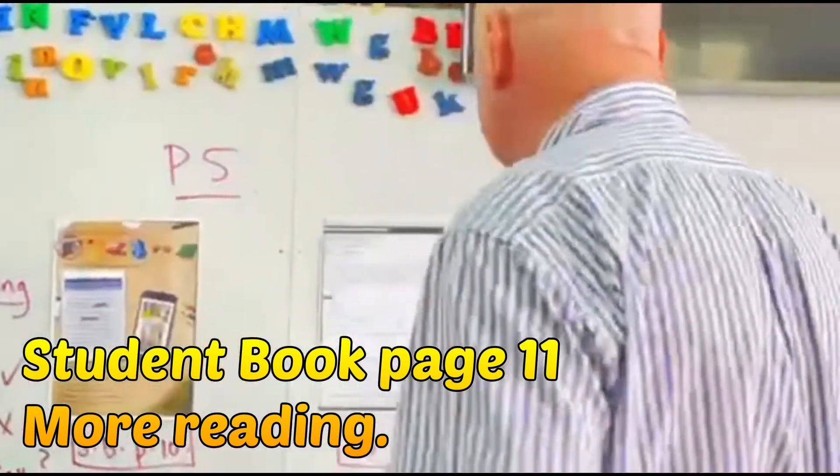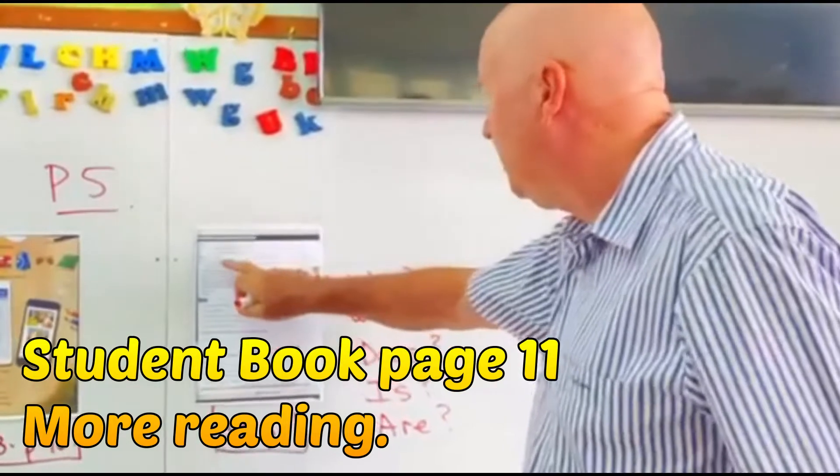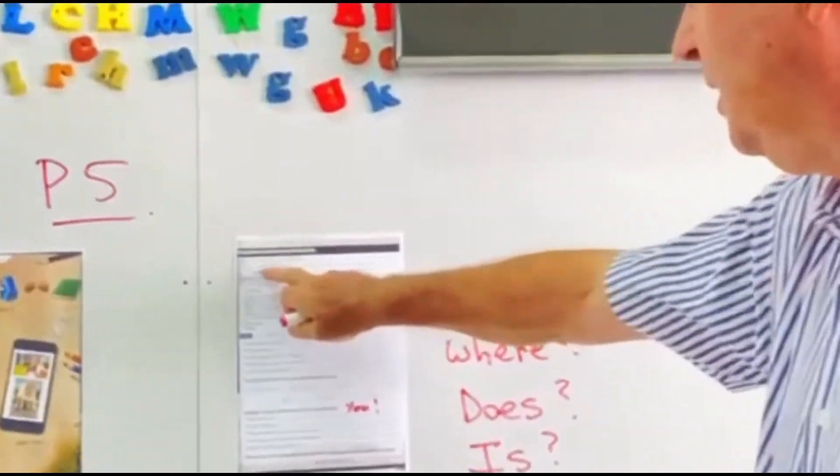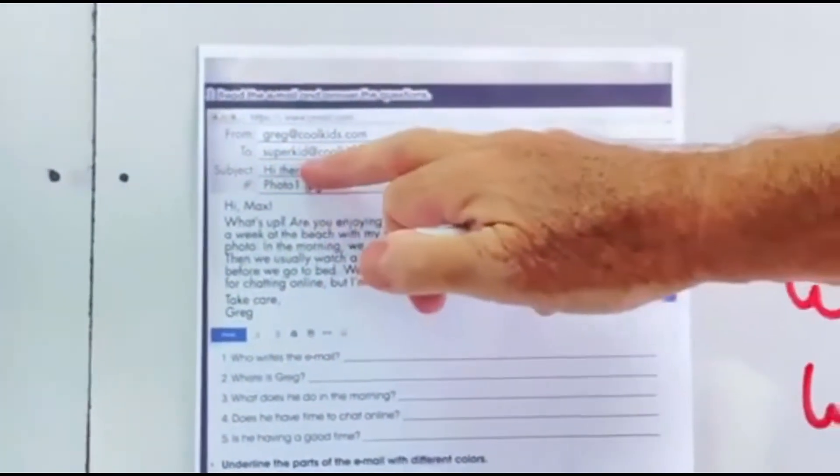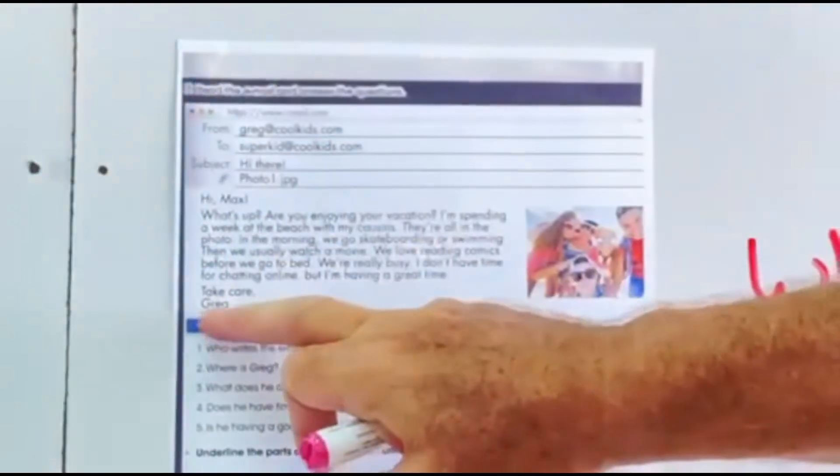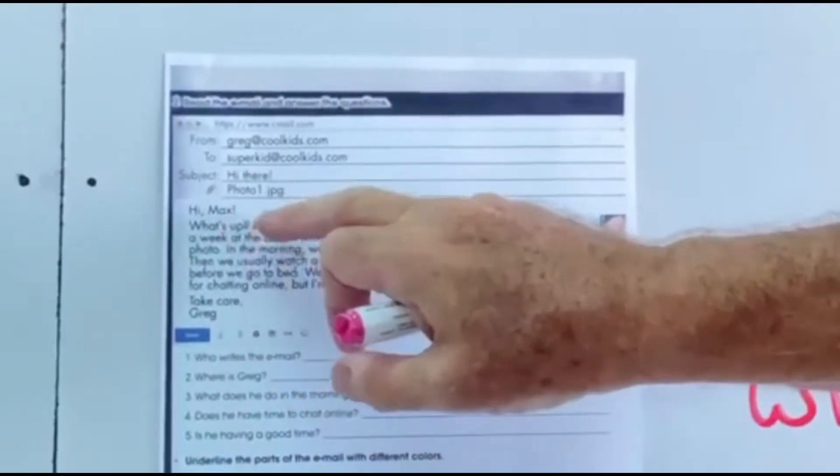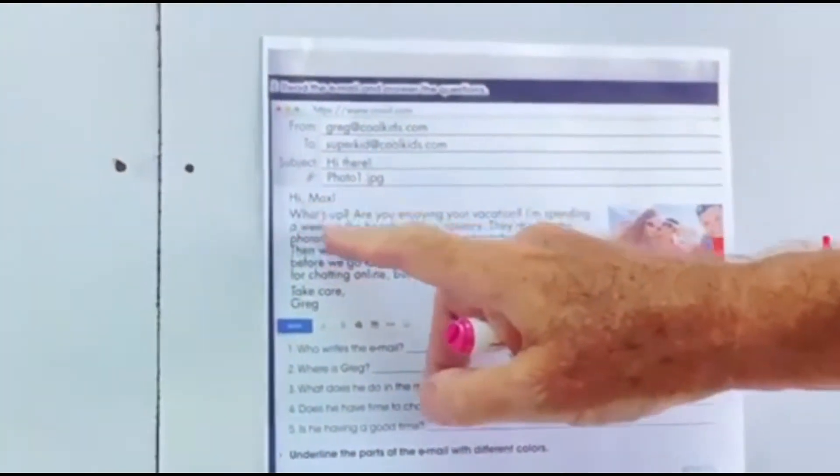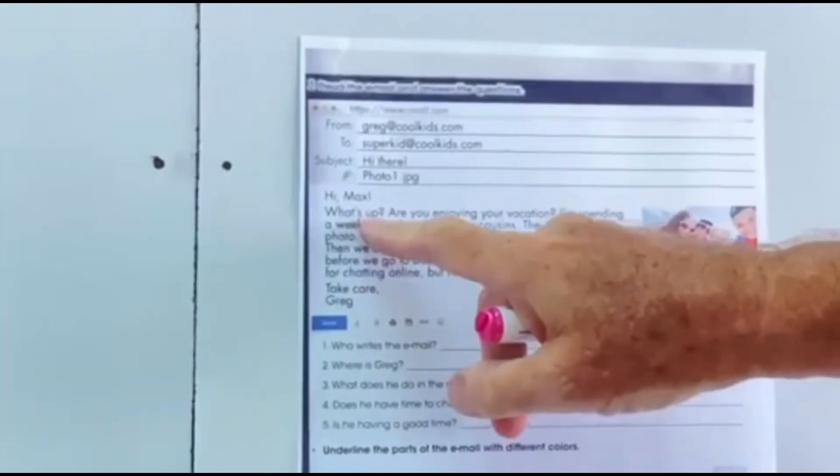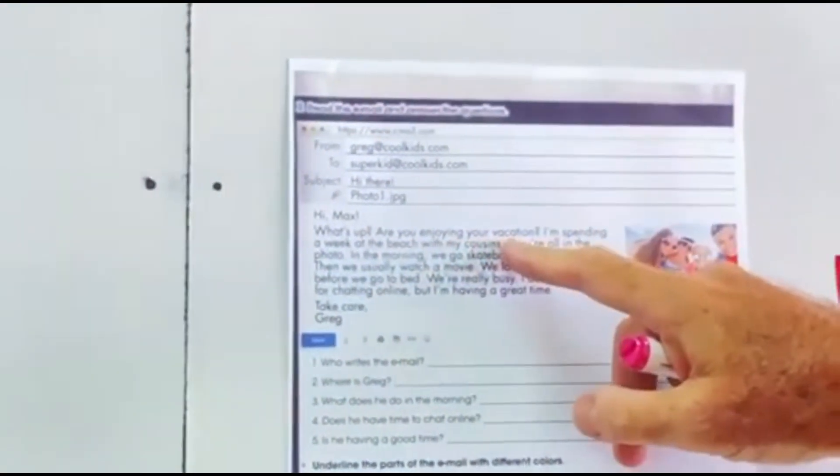Okay, let's go to step one, page 11. And here we've got a little bit more reading. Here we've got an email from Greg, and Greg is writing to Superkid, which is the address of Max. And let's have a look what he says.